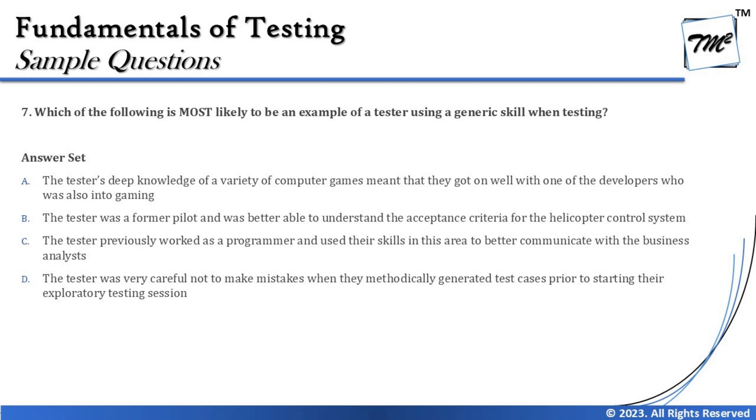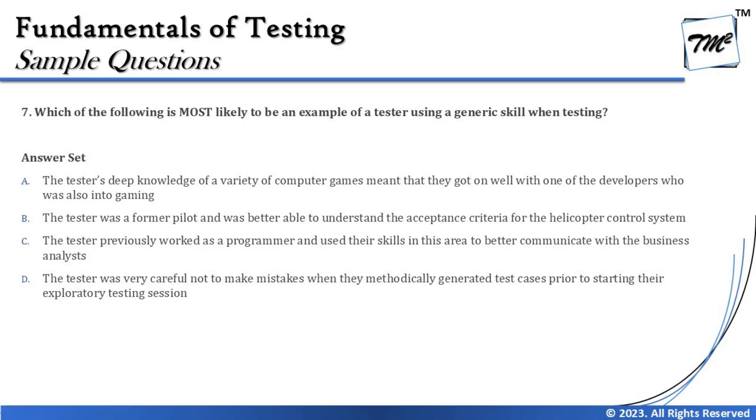Option B says the tester was a former pilot and was better able to understand the acceptance criteria for a helicopter control system. This would make sense because this is where domain knowledge comes into picture. Someone who has been a pilot in the past could easily understand the key acceptance criteria, and this past knowledge can be applied during testing of a helicopter system.